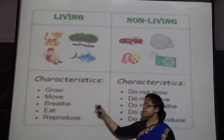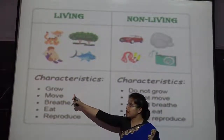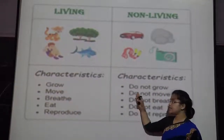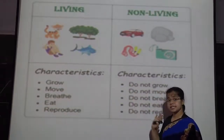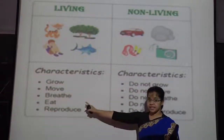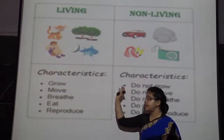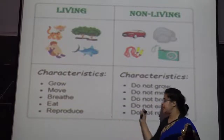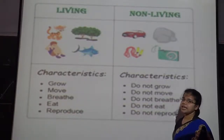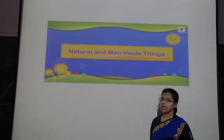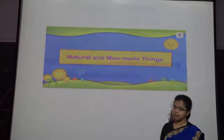Now let us see the difference between living things and non-living things. Living things can grow; non-living things do not grow. Living things can move; non-living things cannot move. Living things breathe; non-living things do not breathe. Living things can eat; non-living things cannot eat. Living things can reproduce; non-living things cannot reproduce.